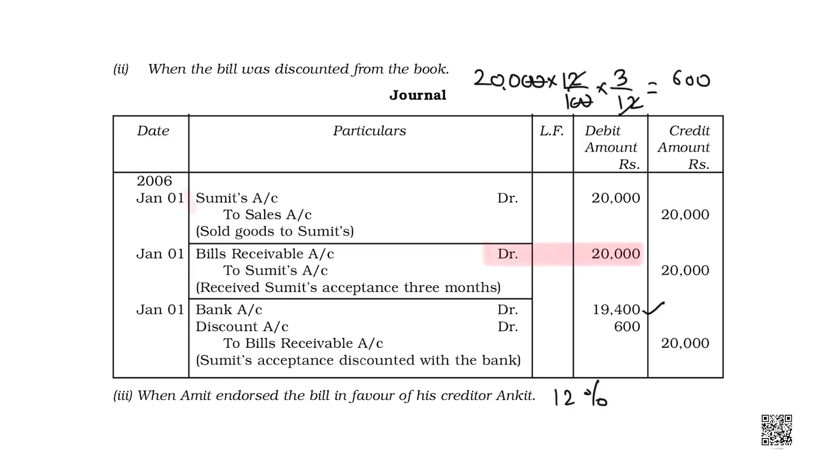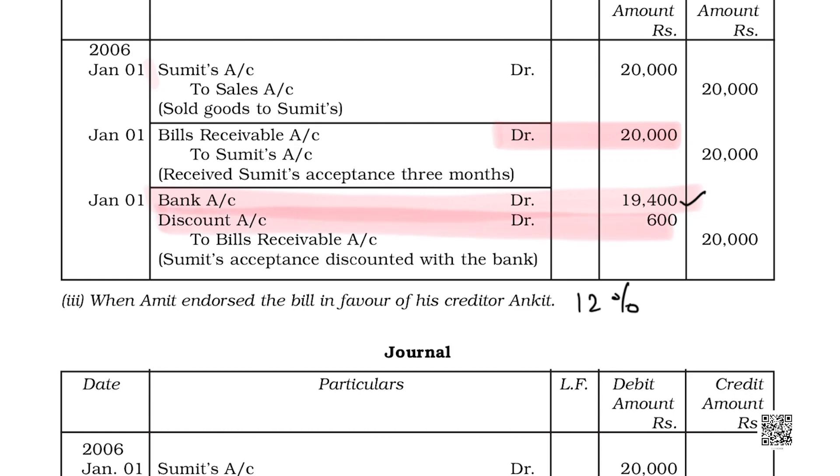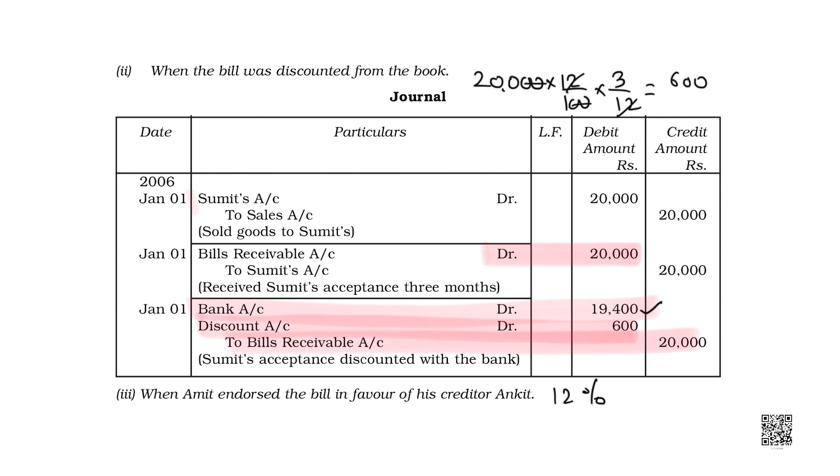So Amit is going to get 20,000 minus 600, that is 19,400 in his bank. And 600 is going to be the discount. This discount is debited in the books of Amit because Amit is facing it as a loss — as an expense, and all expenses and losses are debited. And bill receivable has slipped from his hands. Earlier bill receivable was debited, but now the bill is gone, so bill receivable would be credited in the books of Amit. This is the case of how we transfer a bill to a bank to get it discounted.